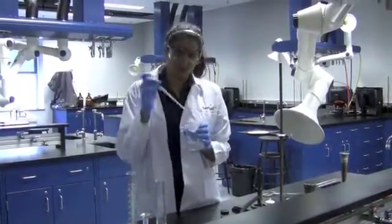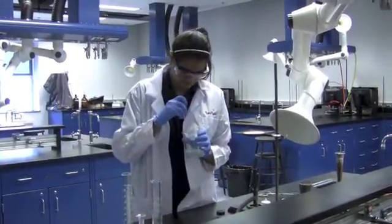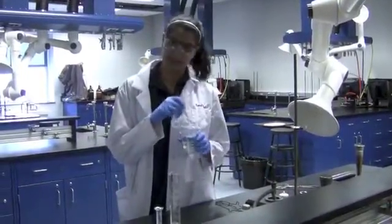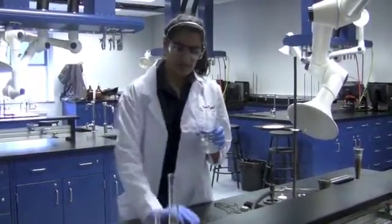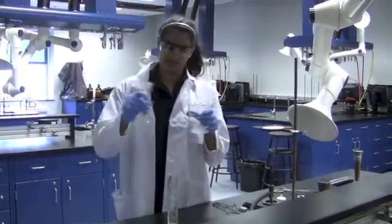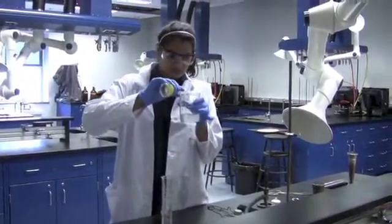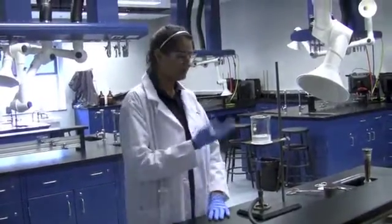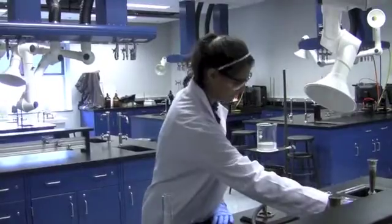Now I'm going to stir this until the unknown dissolves completely. Now, once the unknown has completely dissolved, you're going to add about 5 milliliters of the HCl solution to the beaker. Now, you can see bubbles slowly start to form, so I'm going to shut the flame off.